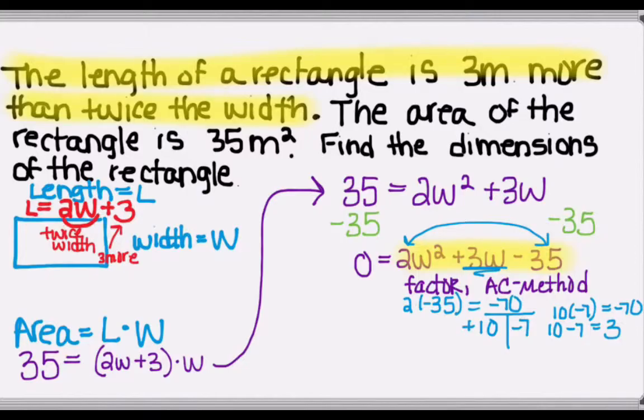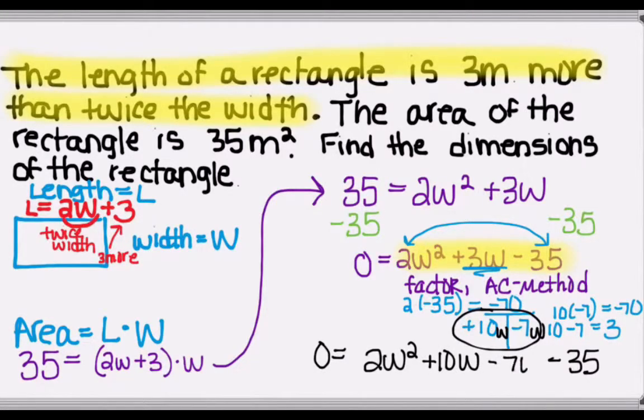So it satisfies both conditions. And now we're just going to rewrite our quadratic, and instead of using the middle term of 3W, we're going to split that up between a positive 10W and a negative 7W. So we get 2W squared, stays the same. The negative 35 stays the same. But in the middle, instead of the plus 3W, we're going to have plus 10W minus 7W.